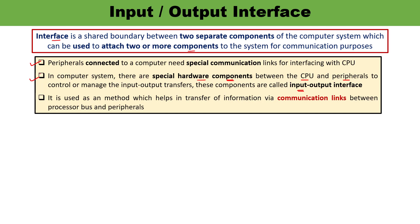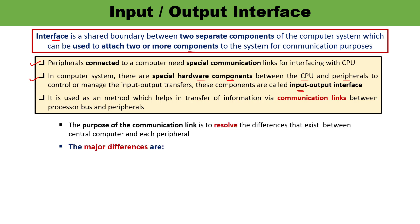When we are talking about the communication link established between the CPU and the peripherals, interface is required to facilitate that communication link — to help the information transfer between the processor and peripherals. The purpose of the communication link is to resolve the differences which exist between the computer and the peripheral. There are various kinds of differences which may exist between the CPU and the peripherals.